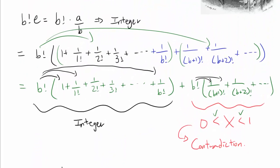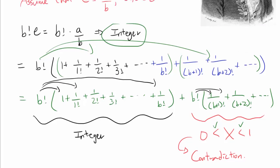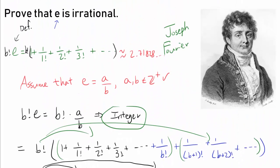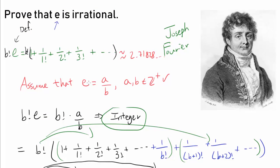So we have the contradiction: an integer plus something strictly between 0 and 1 would have to be an integer — which is impossible. Therefore our assumption that E is rational must be wrong. We have proven that E is irrational.